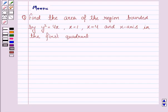Hello students, let's work out the following problem. Find the area of the region bounded by y² = 4x, x = 1, x = 4, and the x-axis in the first quadrant.